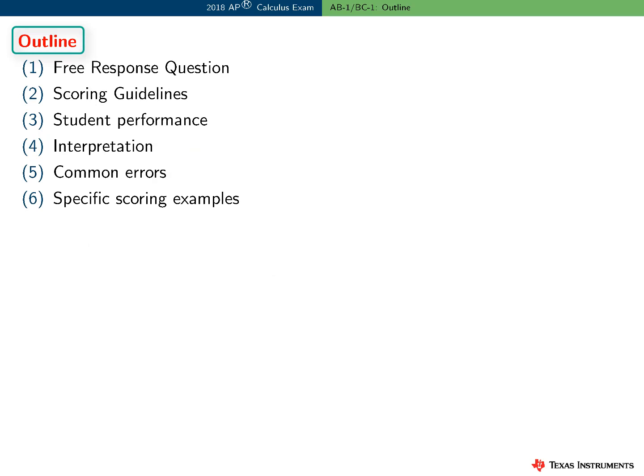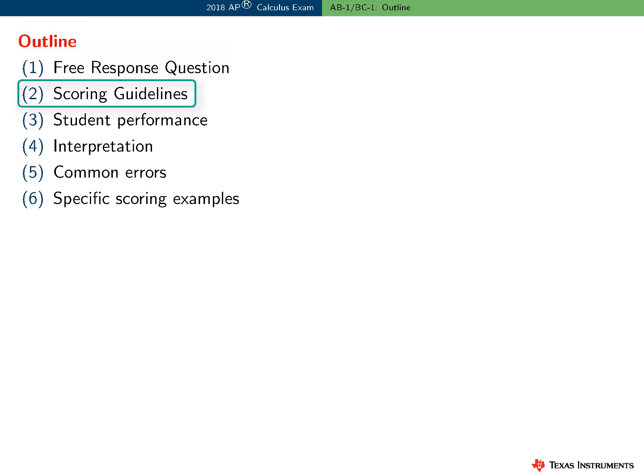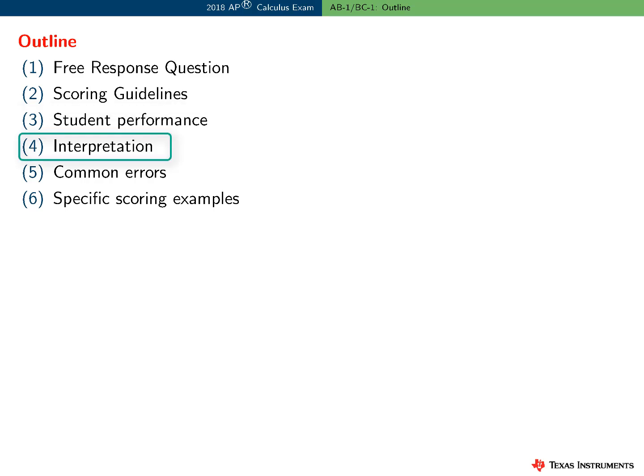Here's an outline of the information presented in this video. I'll start by reviewing the free response question and the scoring guidelines used at the AP Calculus reading. I'll present a brief general summary of student performance on this question, and then I'll consider more detailed interpretations of the scoring guidelines, how they were applied, some common student errors, and where appropriate, some specific scoring examples.